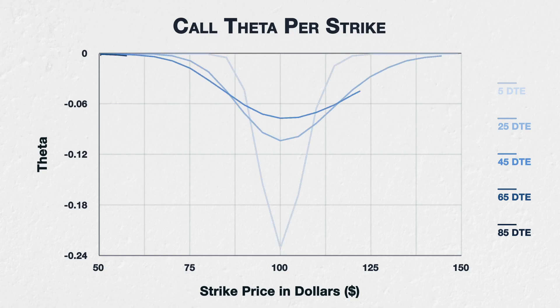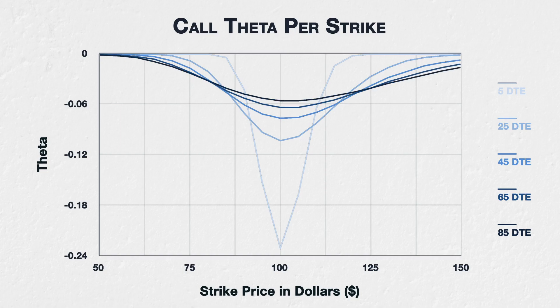This chart shows the theta for all options of a fictional asset with a current price of $100, implied volatility of 50%, and varying days to expiry. Strikes range from $50 to $150, and the days to expiry ranges from 5 up to 85.